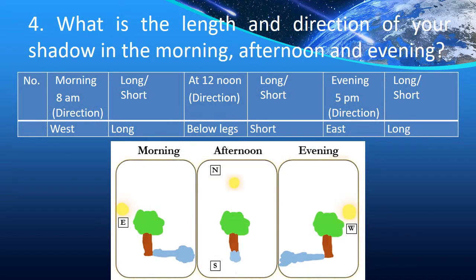Question 4: What is the length and direction of your shadow in the morning, afternoon, and evening? You know that the sun rises in the east and sets in the west. When the sun is in one direction, the shadow of the object will be in its opposite direction. About the length of the shadow — that depends on the angle at which the sun is. If it is directly overhead, the shadow will be smaller. If it is farther away, the shadow will be longer.